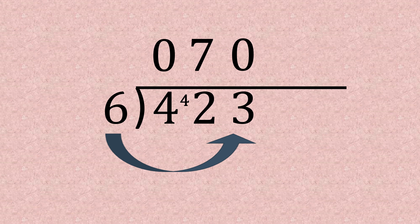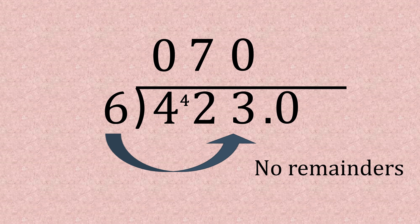And now we need to get rid of that three, so we need to add the zeros in the bus stop, carry the three over because we don't want any remainders. So 30 divided by six is five, so our answer would be 70.5.